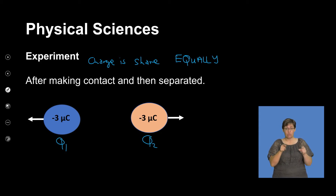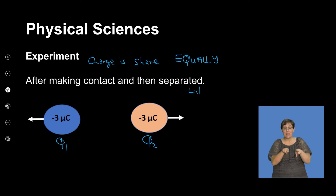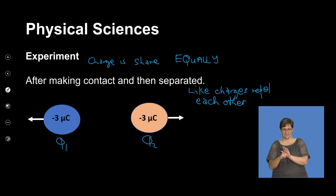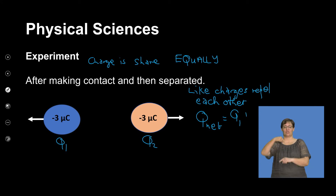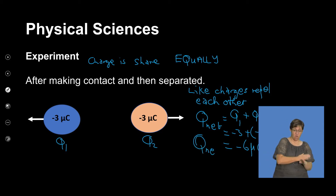Now these two materials have identical charge in terms of the quantity each carries. Because now they are like charges, they exert a force of repulsion on each other — like charges repel. Q_net is still Q1 plus Q2, which is negative 3 plus negative 3, equaling negative 6 microcoulombs. Our net charge before and after contact has remained unchanged — hence we use the term conservation.